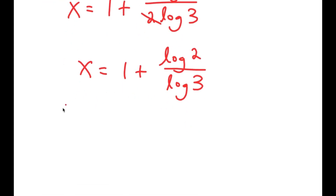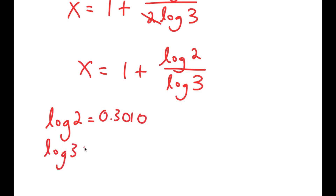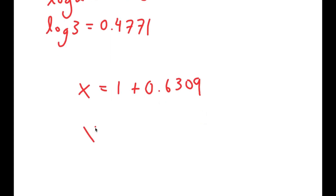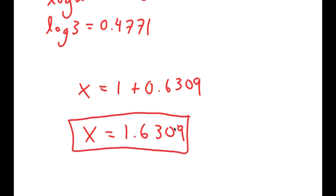Now, log 2 equals 0.3010 and log 3 equals 0.4771, so x equals 1 plus 0.3010 over 0.4771, which equals 1 plus 0.6309, giving x equals 1.6309. This is my solution.